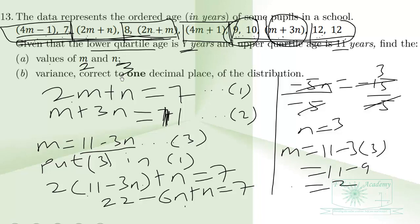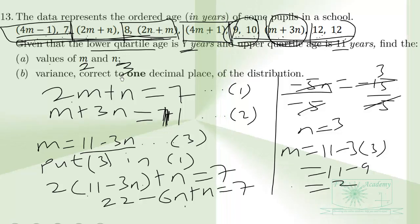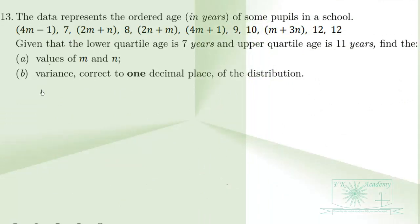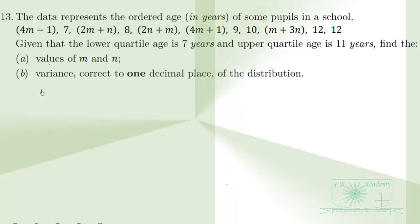Part B of the question asks us to find the variance correct to one decimal place. To find the variance, we must first calculate the mean. We know the values of M and N, so we substitute them into the dataset.